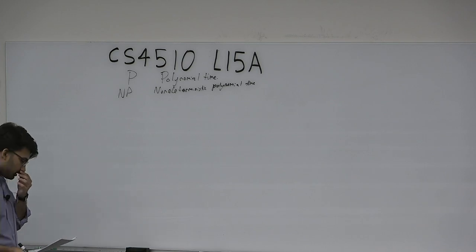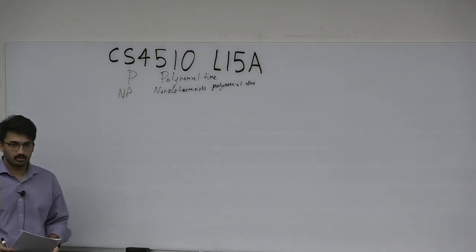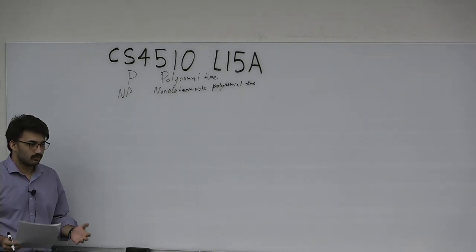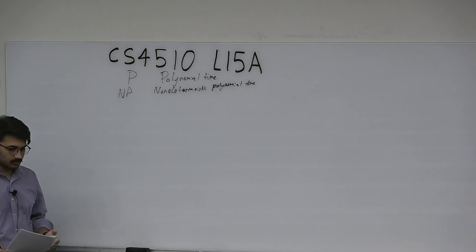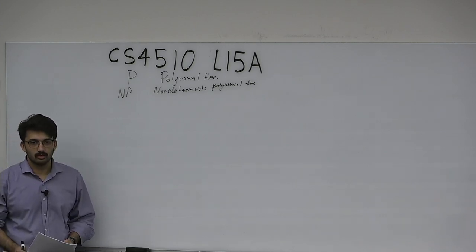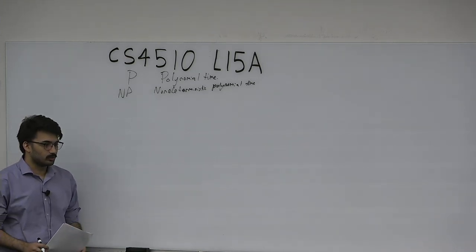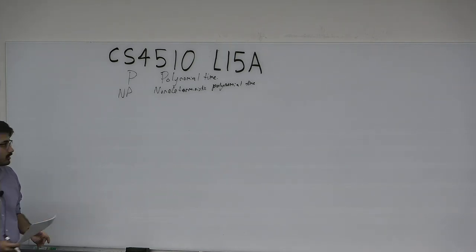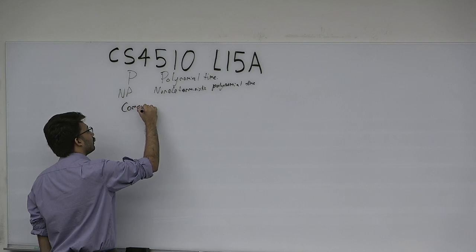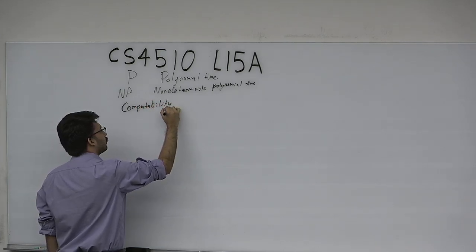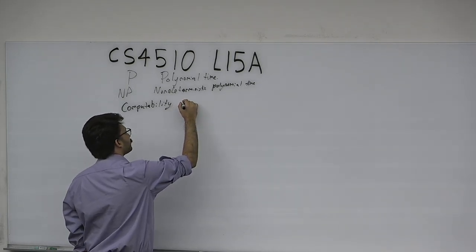So we finished a huge discussion on the theory of computation with respect to possibility — like, given a certain defined problem, is it solvable at all? And today we're concerned with the second half of this course, a totally different unit, which is on complexity theory. Computability theory is really about: solvable at all.